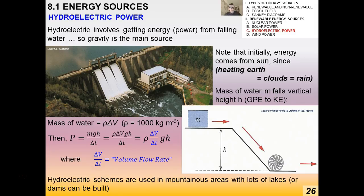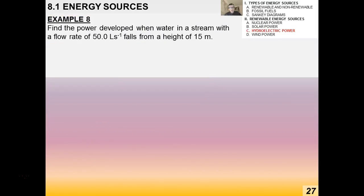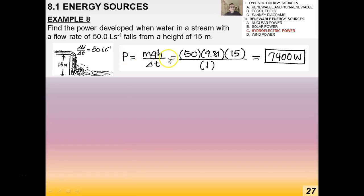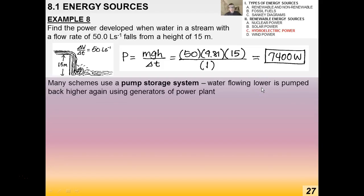Example: find the power developed when water in a stream with a flow rate of 50 liters per second falls from a height of 15 meters. Using P = mgh/Δt, the answer is 7400 watts. Many hydroelectric schemes also use a pump storage system, where water flowing lower down is pumped back up again using the generators of the power plant.